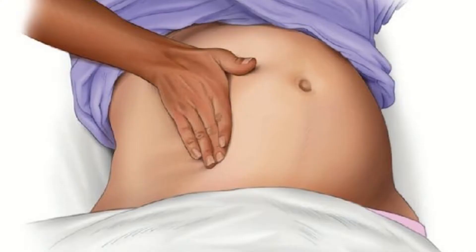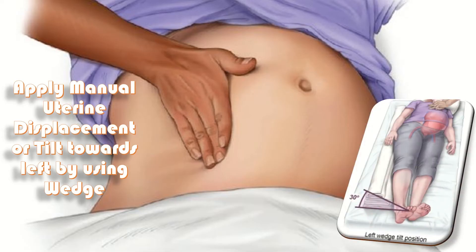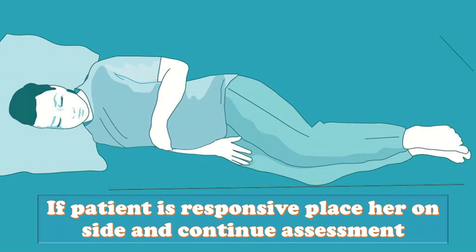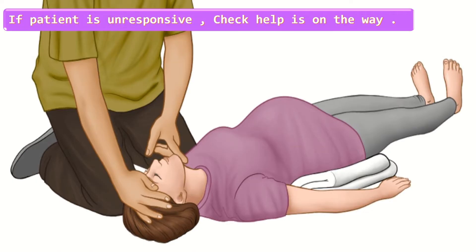A very important step in maternal resuscitation is to relieve pressure on the inferior vena cava. For that, apply manual uterine displacement or tilt the patient toward the left using a wedge. If the patient is responsive, place her on her side and continue assessment. If unresponsive, check that help is on the way.